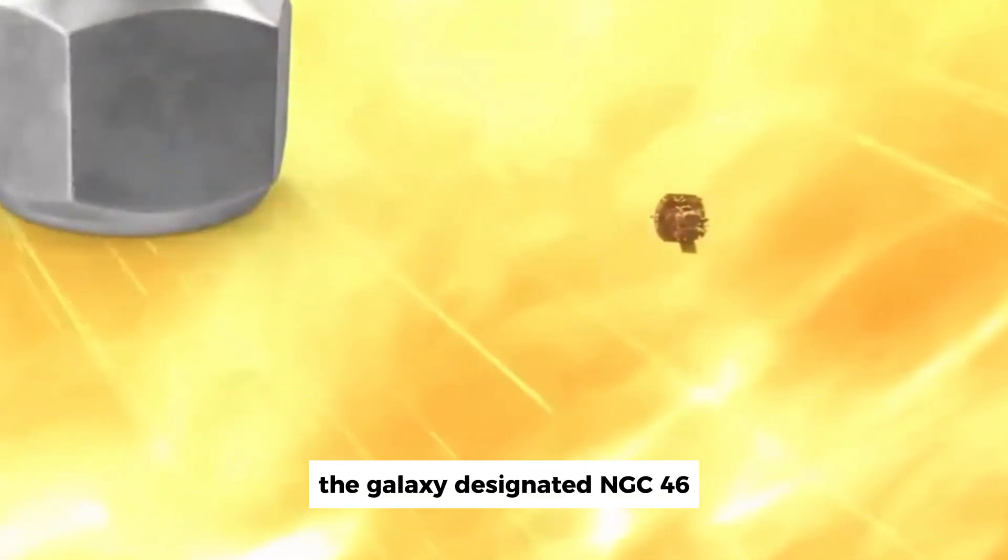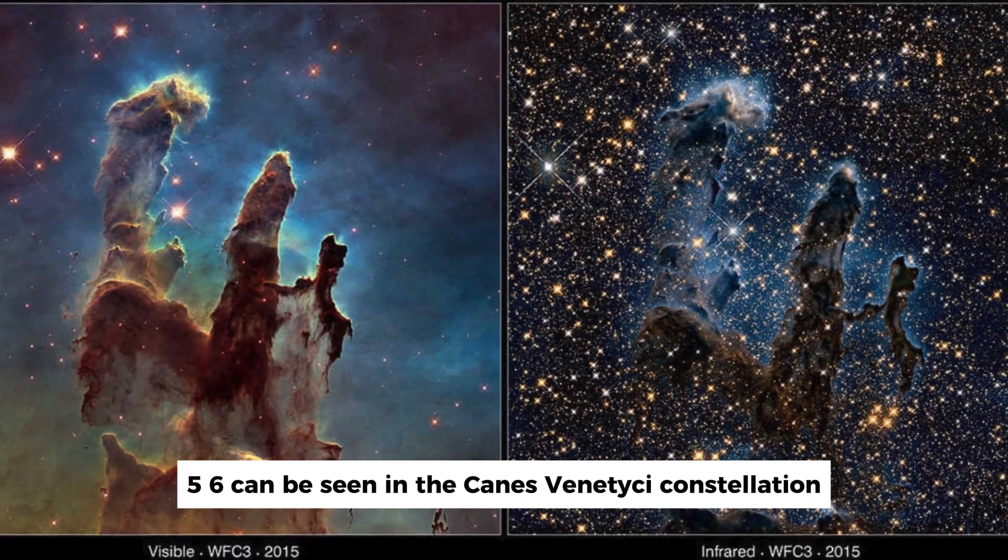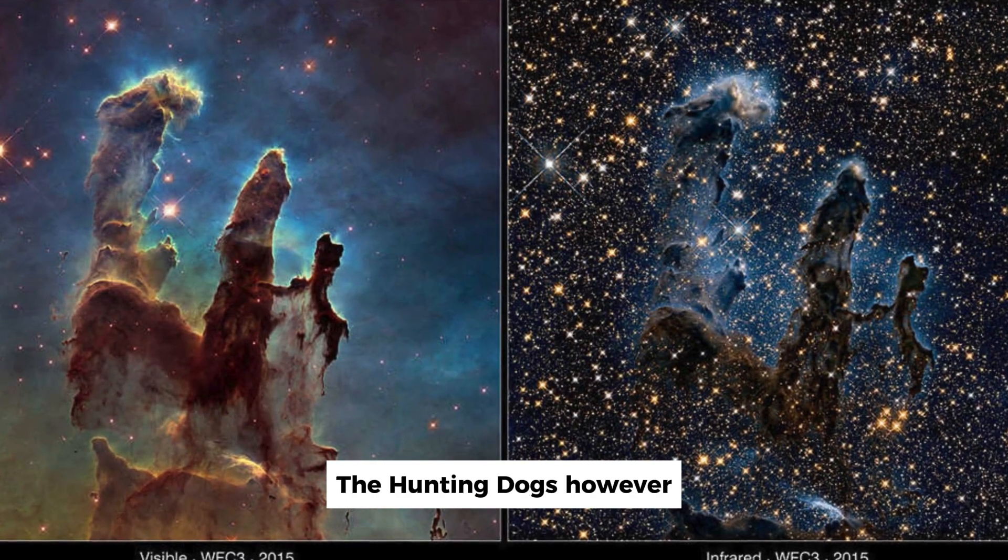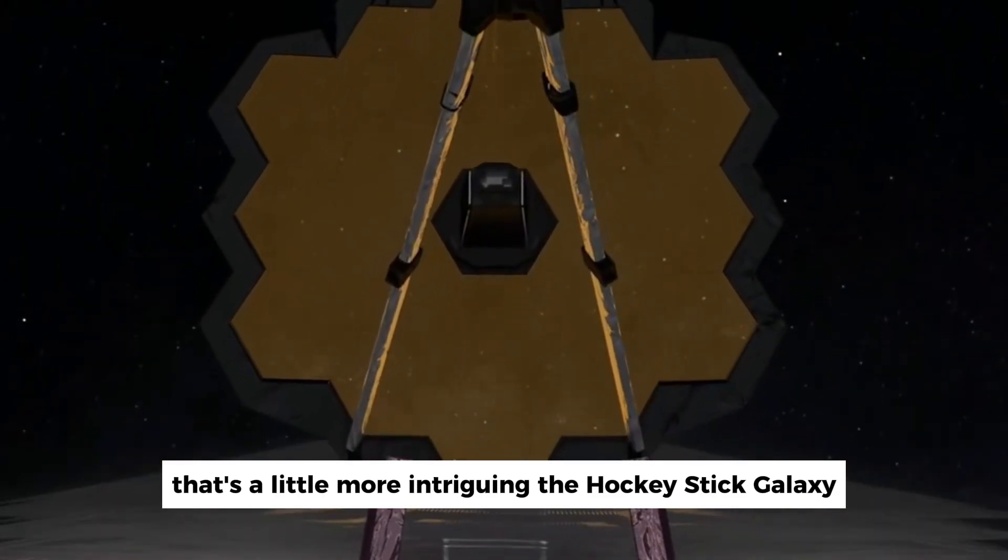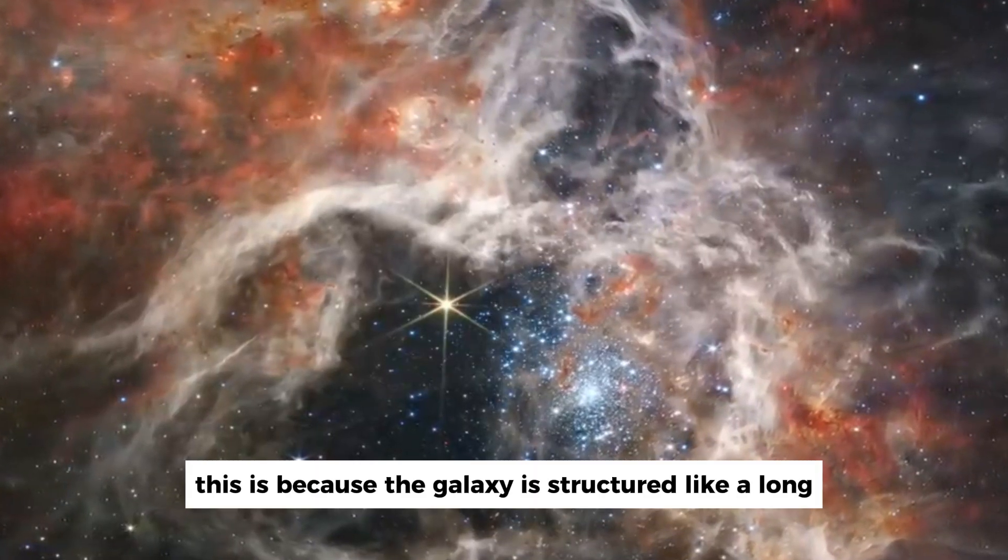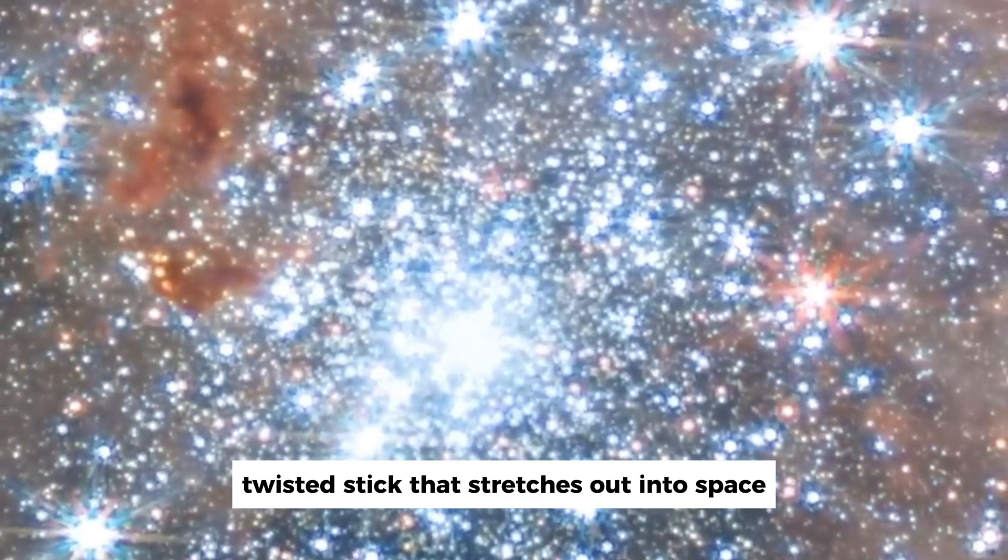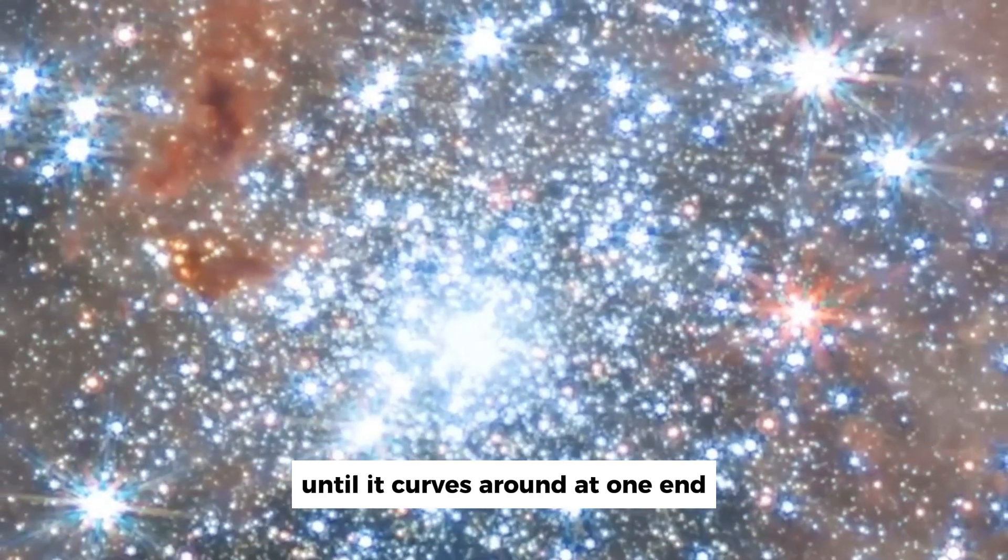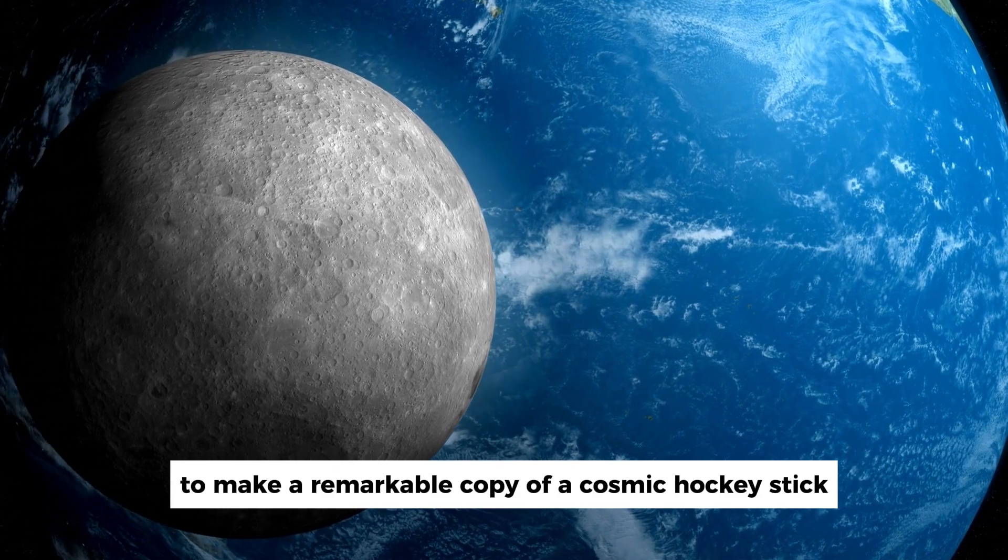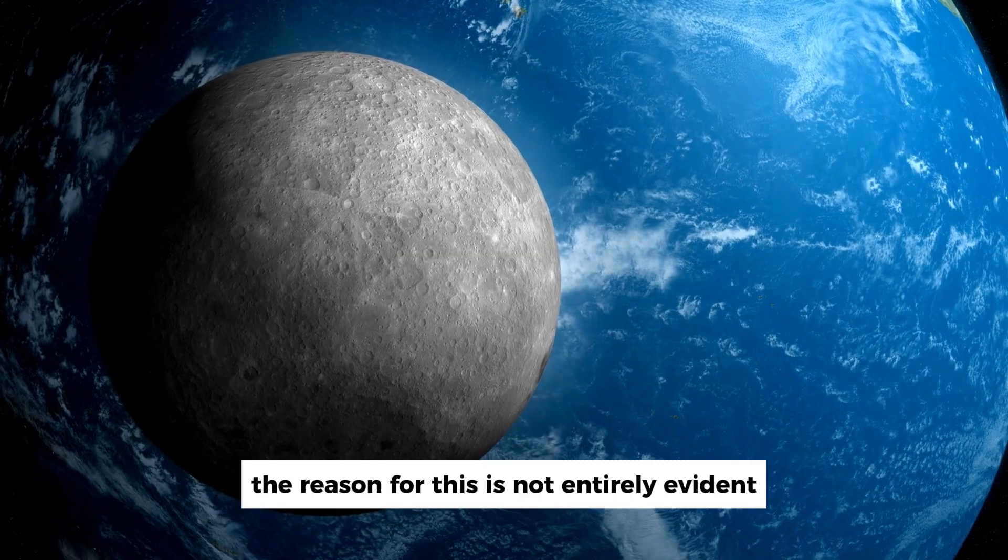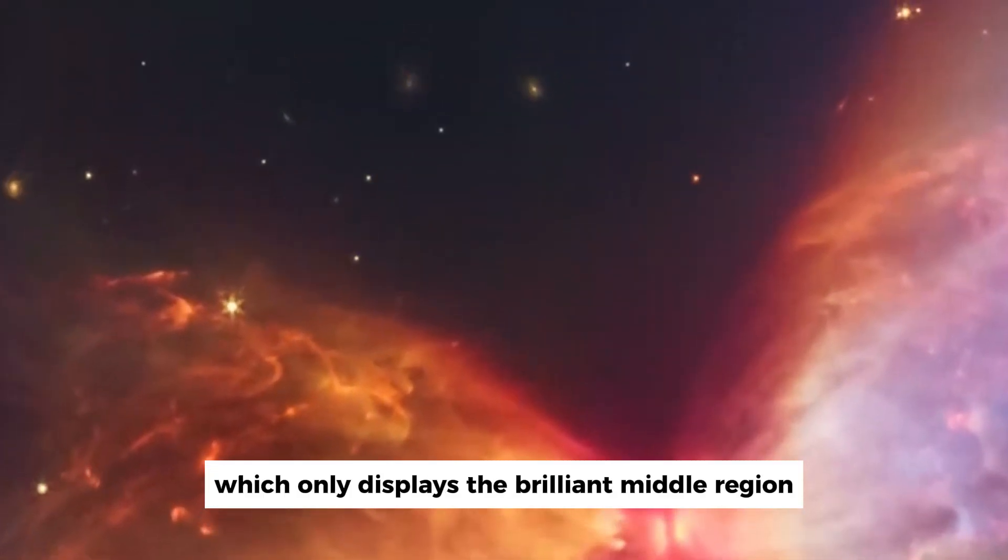The galaxy designated NGC 4656 can be seen in the Canes Venatici constellation, the hunting dogs. However, it is also known by a name that's a little more intriguing, the hockey stick galaxy. This is because the galaxy is structured like a long, twisted stick that stretches out into space until it curves around at one end to make a remarkable copy of a cosmic hockey stick.